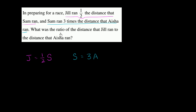What was the ratio of the distance that Jill ran to the distance that Aisha ran? So let's think about it. We have how much Jill ran in terms of S, so maybe we can write how much Aisha ran in terms of S as well, and then we could find the ratio — and the S's should cancel out.